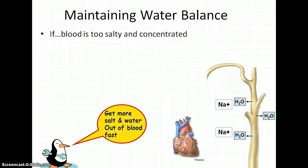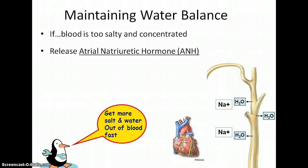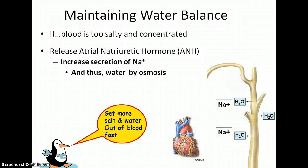There's another related hormone. If the blood has too much stuff in it — it's too concentrated — we release atrial natriuretic hormone, ANH. ANH causes sodium to be secreted back into the filtrate, so we get rid of excess sodium.